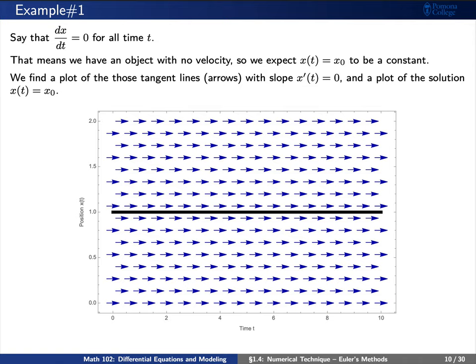First, consider the example where the derivative is zero. This means that we have an object with no velocity, or we can think of this as saying that our position is a constant as a function of time. Here you can see that in this grid, we have on one axis is time, and the other axis is position.